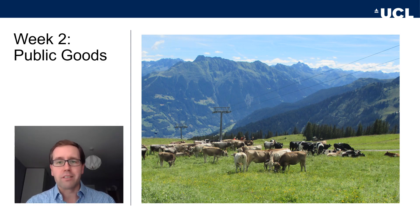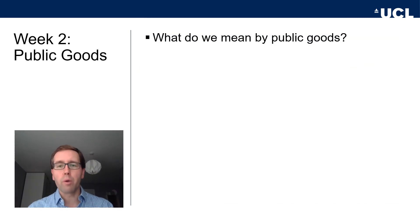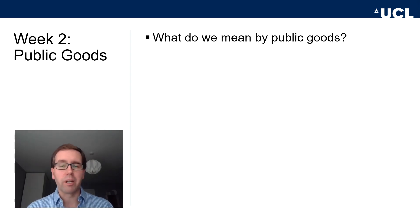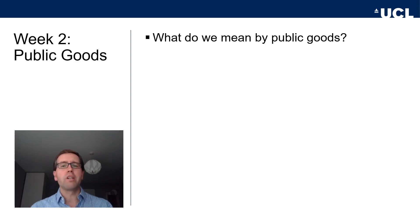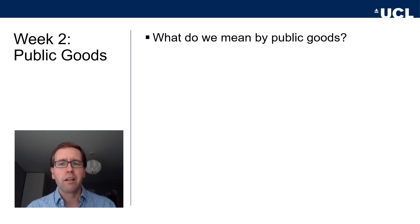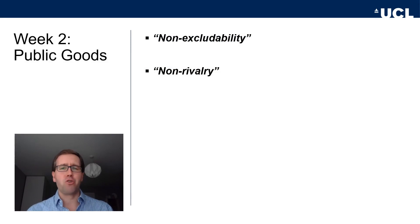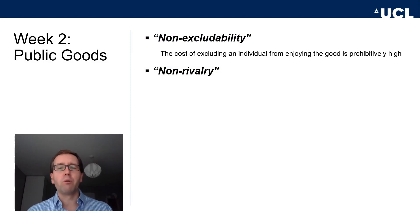What do we mean by public goods and how do we distinguish public goods from private goods — like the cookies and coffee we encountered last week? Public goods are basically distinguished by two key features, and these two key features are so important that even a baby Mr. Spock from the science fiction world of Star Trek has to learn them in the future: non-excludability and non-rivalry.